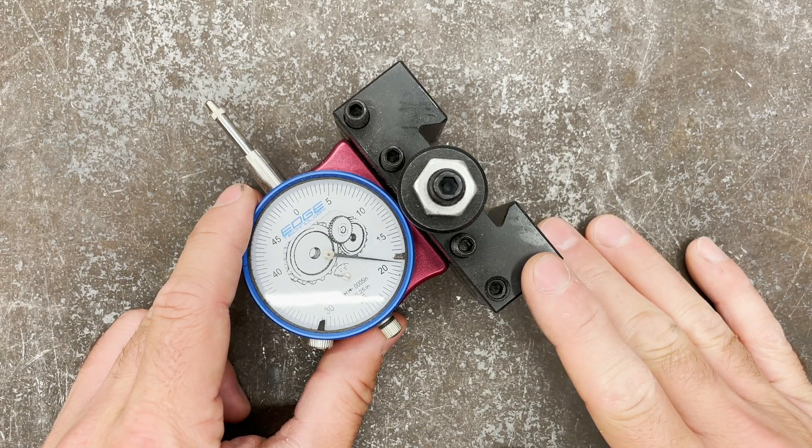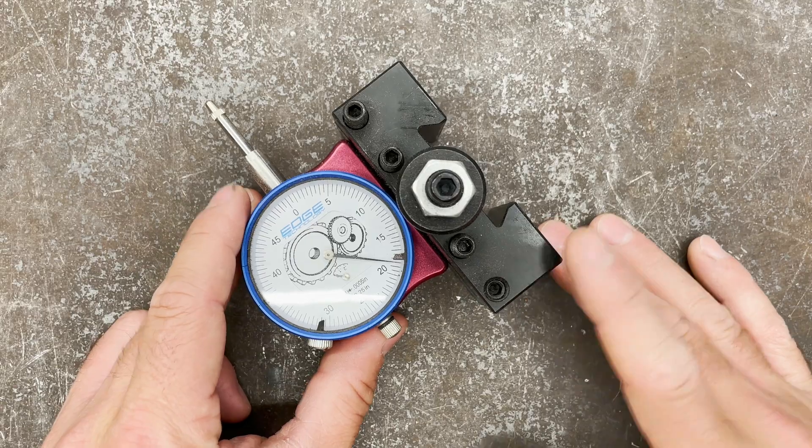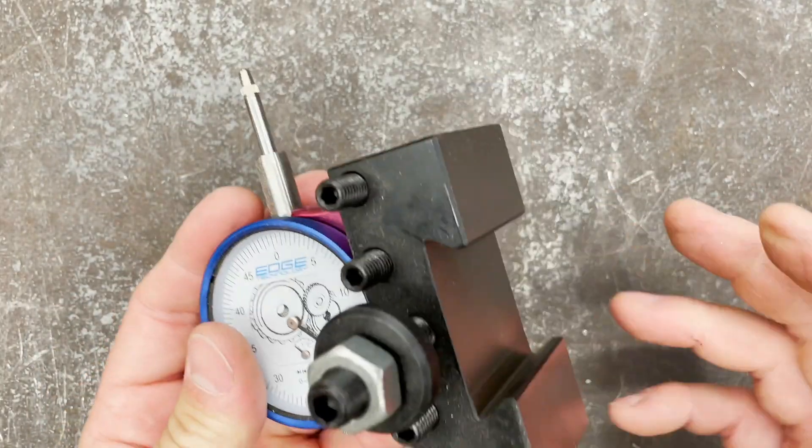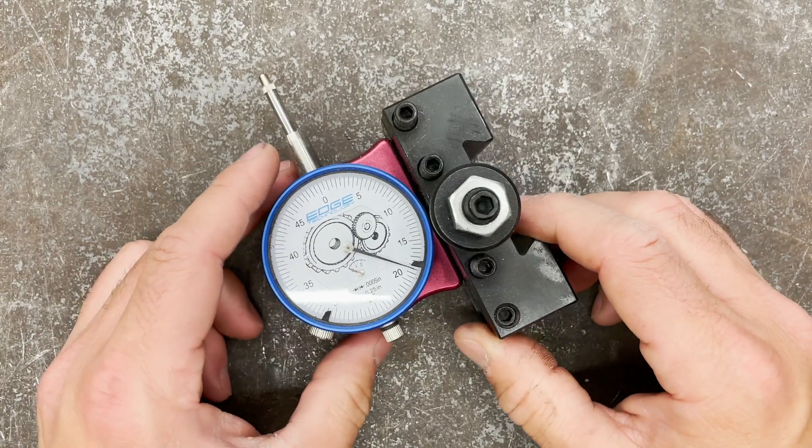I've got this mounted on a standard BXA quick change tool post. It just bolts in there like a normal tool. This is just a standard Chinese version, but it works okay.